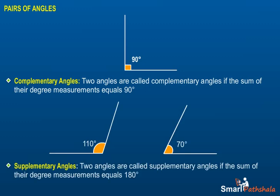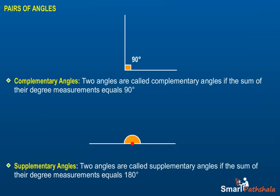Supplementary Angles. Two angles are called supplementary angles if the sum of their degree measurements equals 180 degrees.